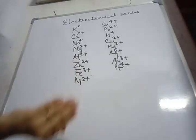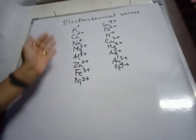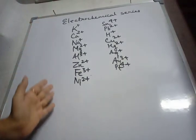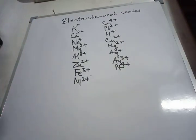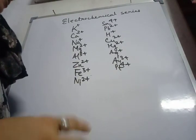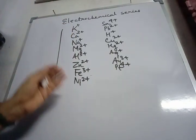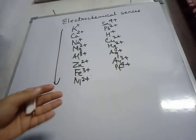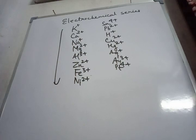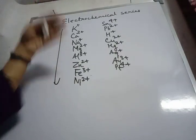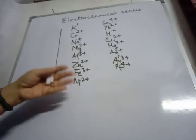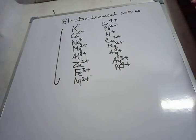The previous series was for metals; this is the electrochemical series of cations. Basically, when we are moving down the series, the tendency of the cations to get deposited at the cathode increases. As you move from top to bottom, the tendency of the cations to get discharged at the cathode increases.